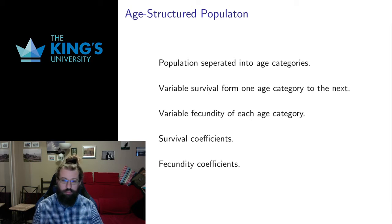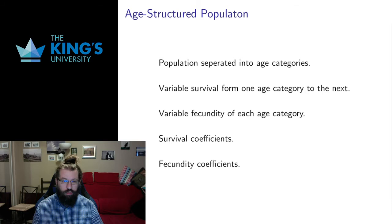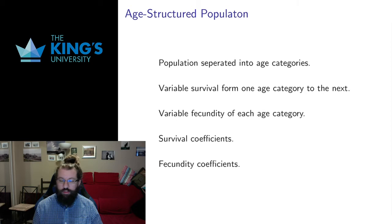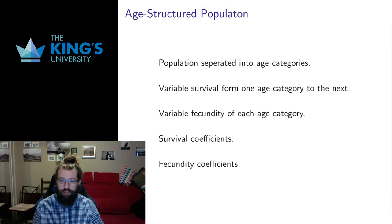That separation can happen in all sorts of ways and in any number of categories. You could have some kind of small mammal whose life expectancy is four years and separate it into four categories: less than a year old, a year old, two years old, three years old, and so on. You could have smaller separations if you're using insects that only live for a season, with categories in months. If you're using vertebrates that live much longer, you might have categories in decades.